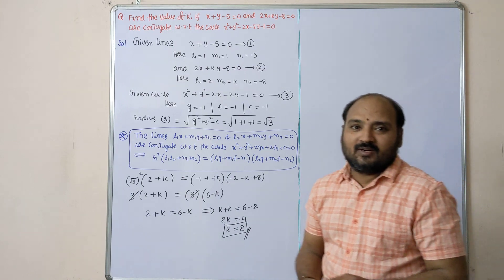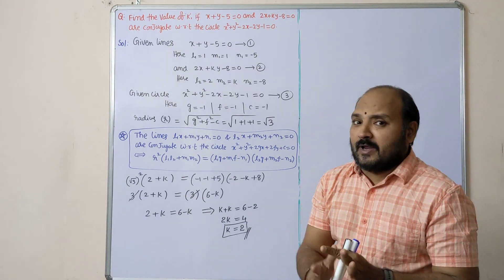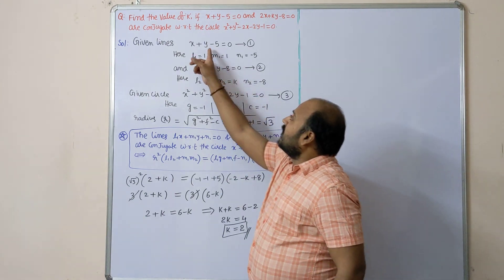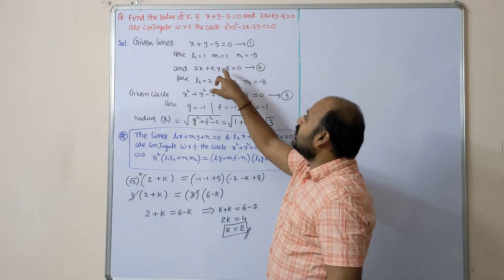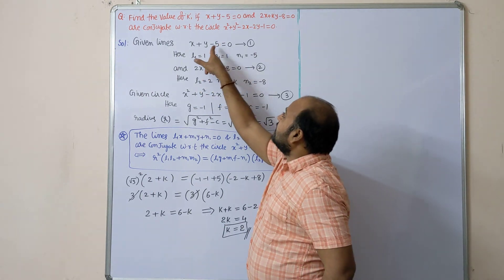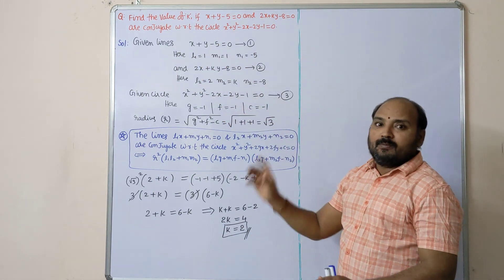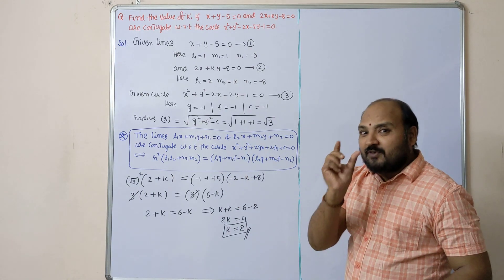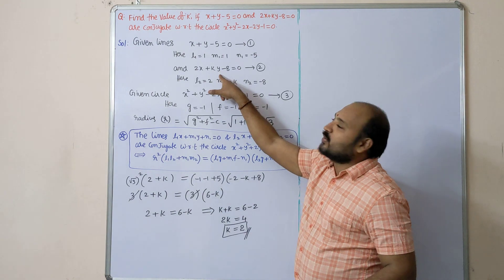Another method is also there. Just I will explain, I am not going here. Among these two lines, unknown value containing this line, find the pole of this line with respect to this circle by applying previous video question. After getting the point, substitute in this equation, you will get k value.